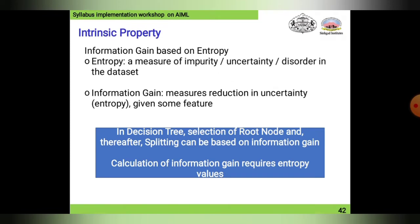Regarding intrinsic properties: information gain is based on entropy. Entropy is a measure of impurity, uncertainty, and disorder in a dataset. Information gain is the reduction in uncertainty — that is, in entropy — given some features. In decision tree construction, selection of the root node and splitting can be based on information gain calculation.